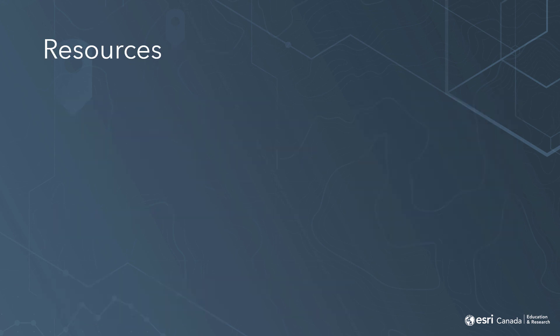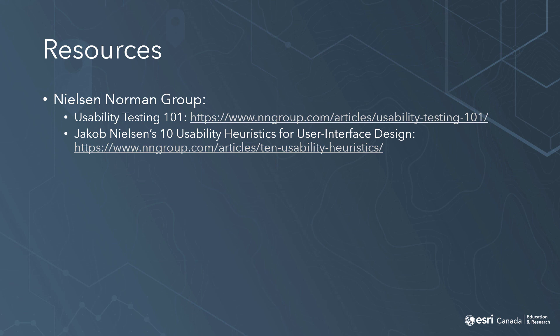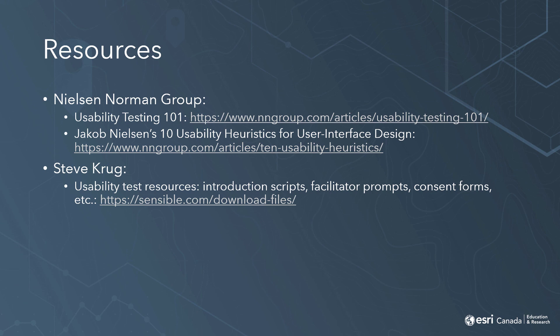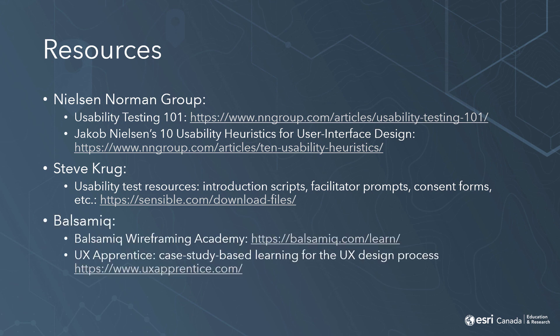One of my favorite sources for information on UX and UI design is the Nielsen-Norman Group's website. In particular, they have a great set of resources on usability testing, as well as Jacob Nielsen's 10 Usability Heuristics — a set of guidelines you can use while designing and evaluating user interfaces. Author Steve Krug has also put together helpful resources for running usability tests, such as an introduction script, prompts for the facilitator, and consent forms for participants. Balsamiq also has a wealth of information on their website for learning how to create wireframes and how this fits into the overall user experience design process. There are links for all of these in the video description below.